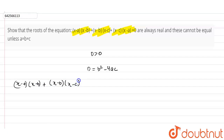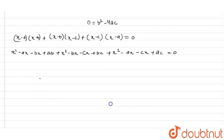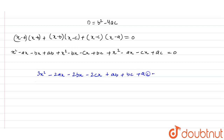Expanding the equation: x² - ax - bx + ab + x² - bx - cx + bc + x² - ax - cx + ac = 0. Collecting terms: 3x² - 2(a + b + c)x + (ab + bc + ac) = 0.